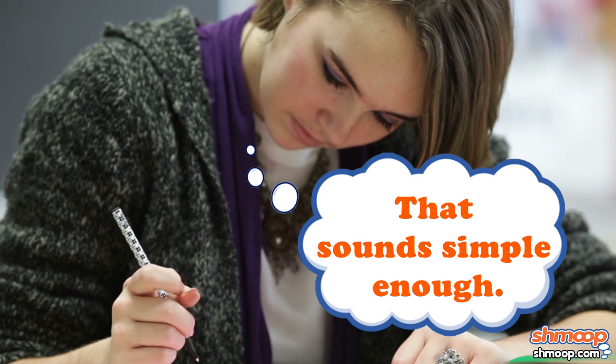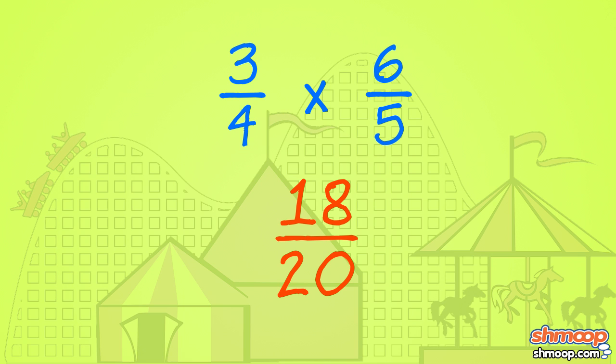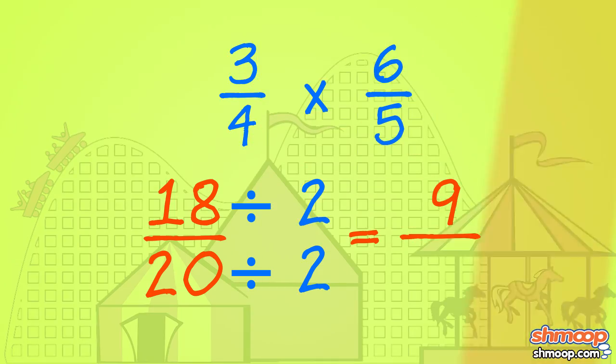Don't forget to simplify your answer as much as you can. The simpler, the better. Dividing both sides by two gives us 9 tenths.